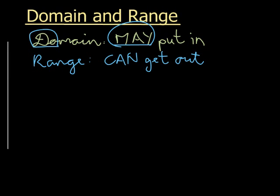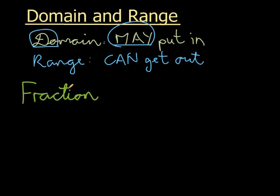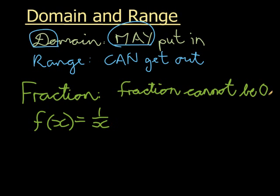Let me start with the example of fractions. If I have f(x) = 1/x, that is my fraction. A fraction cannot be zero — and I mean, it cannot be zero if the numerator is not zero. It doesn't matter what denominator I use, it can never be zero.